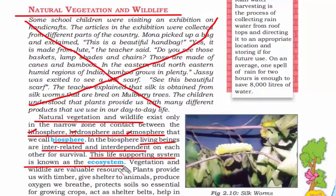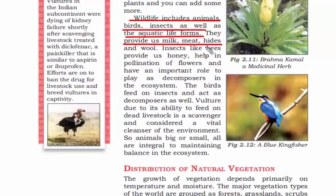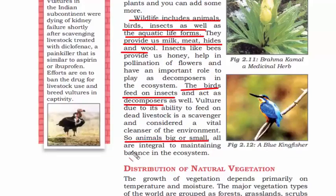The ecosystem is a biosphere in which living beings are interrelated and interdependent on each other for survival. Wildlife includes animals, birds, insects, and aquatic life forms, which provide us milk, meat, and wool. In the ecosystem, birds eat insects, and the one that eats acts as a decomposer. All animals — big or small — are integral to maintaining the balance of the ecosystem.